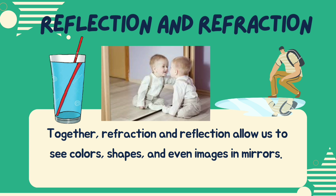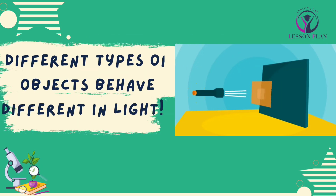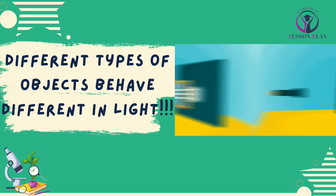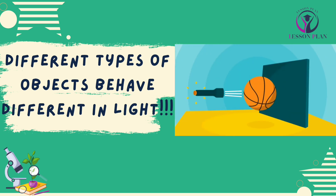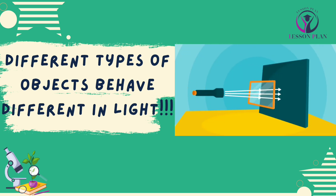So next time you see a straw in a glass of water, or catch a glimpse of yourself in a mirror, remember the incredible science behind it all. Now that we have talked about how light moves and interacts with the world around us through refraction and reflection, let's explore the different types of objects that affect the way we see things.